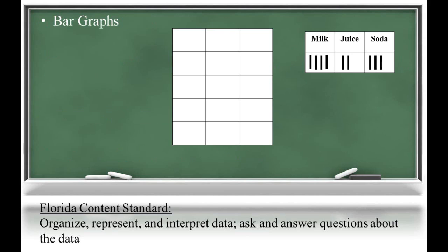Bar graphs help us tell a story about the data. For example, if we survey students about their favorite drink and record the data in a tally chart, we can then create a visual display of the data using a bar graph. The title of the graph is the main idea of the graph. In this case, it's favorite drink. We can then label our x-axis with the type of drink and y-axis with the number of students.